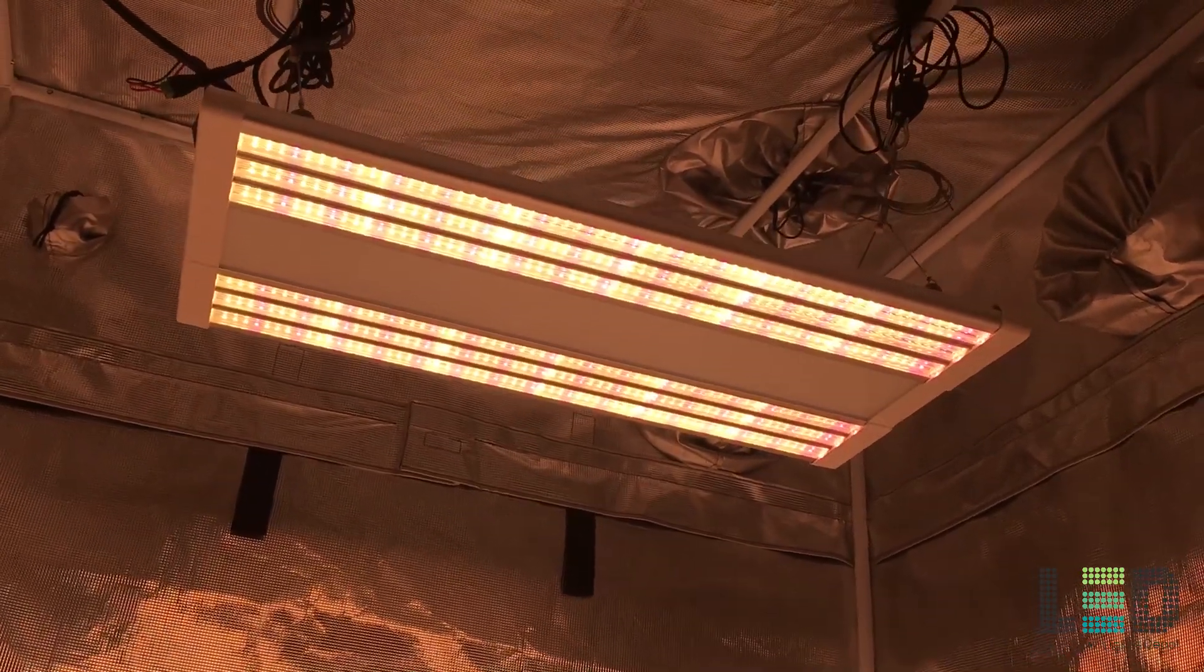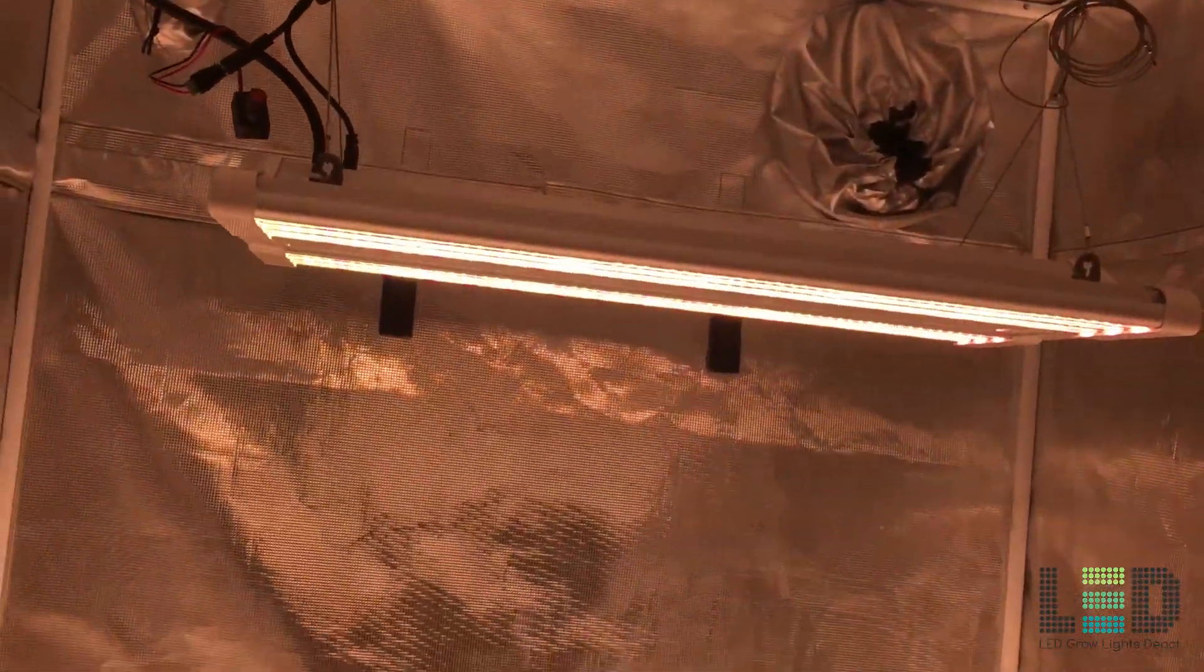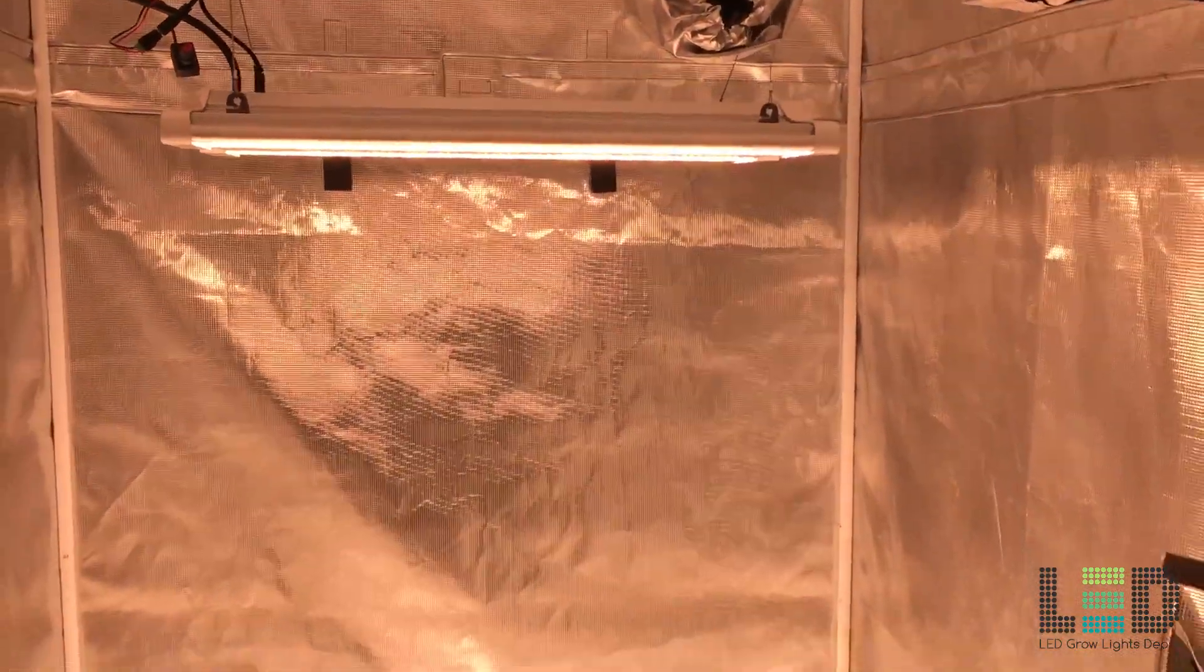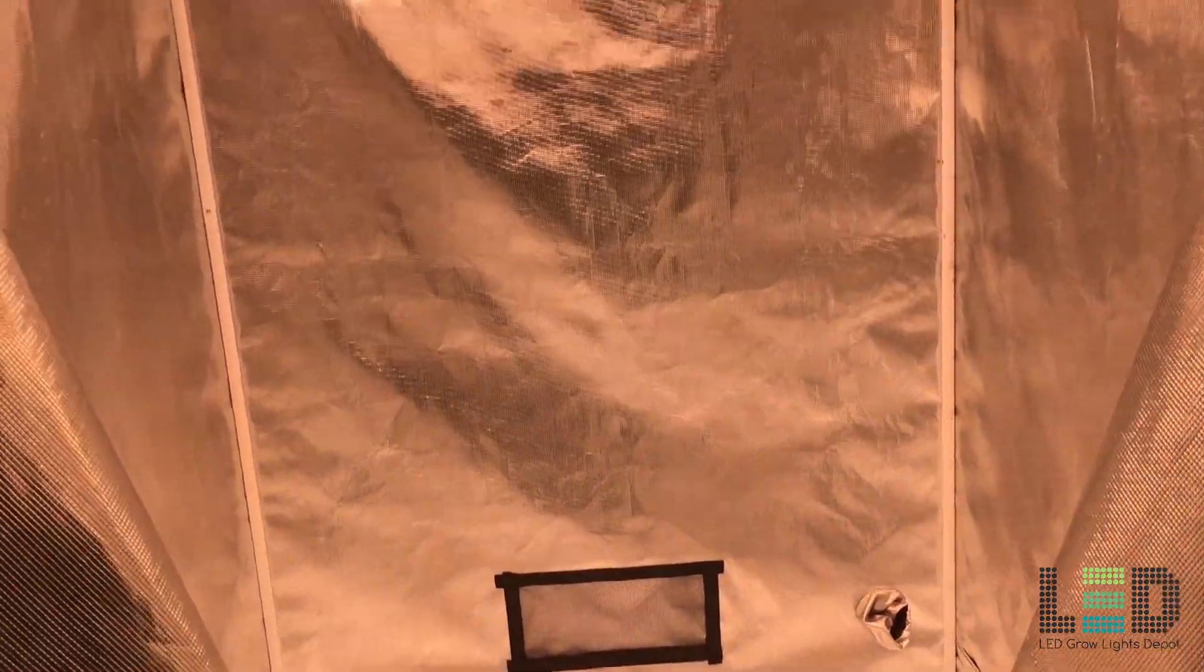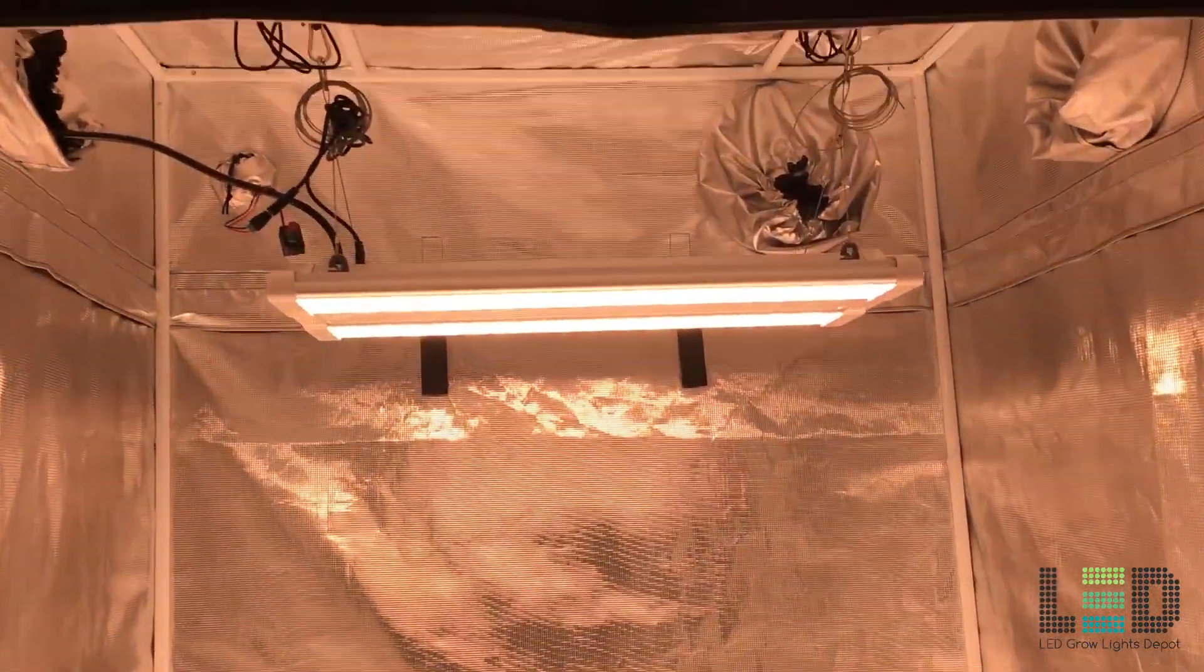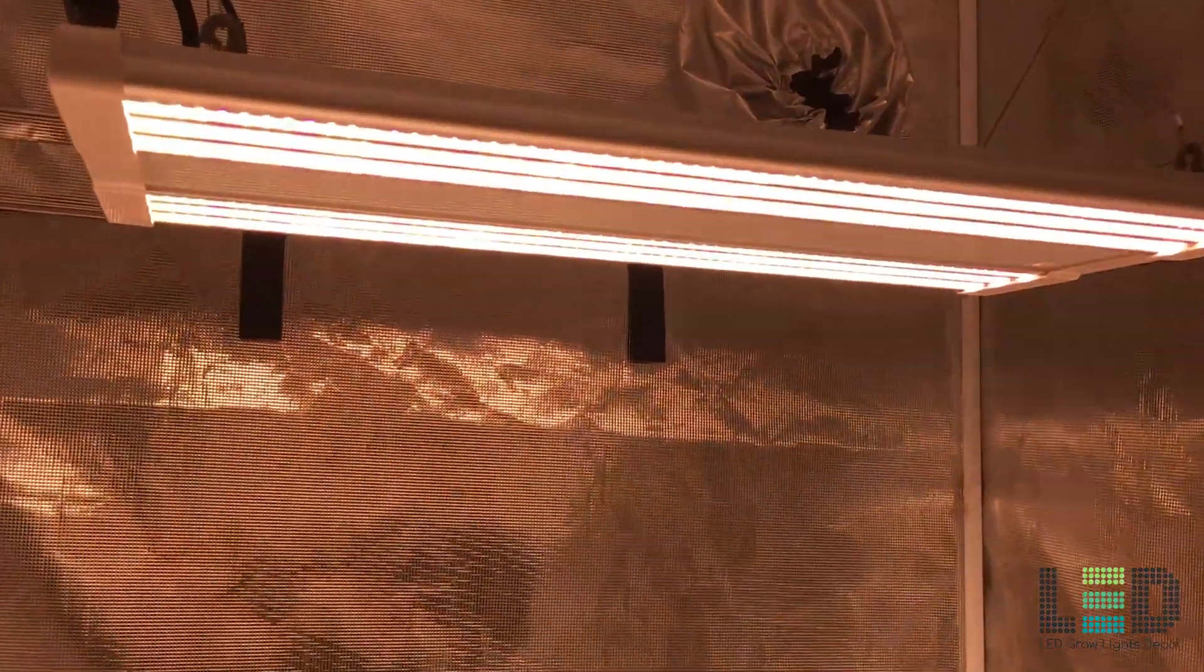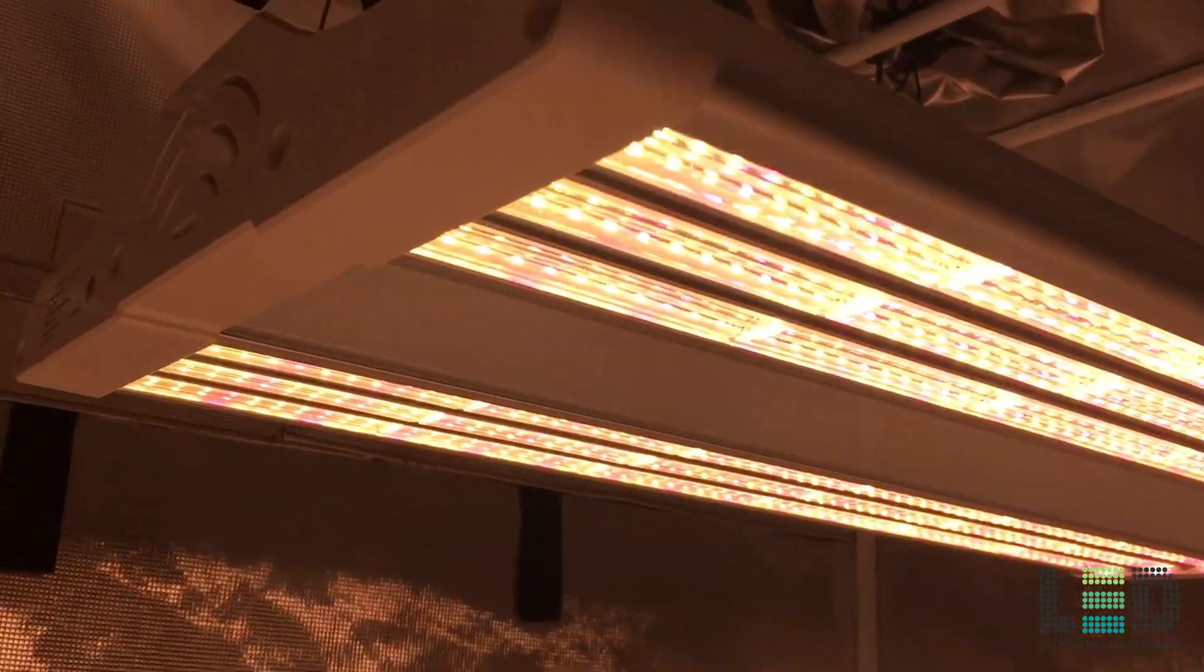A frosted glass panel runs down the entirety of the light and separates the two sets of LED strips. The dimmer allows you to adjust the intensity down from 100% to 10% and is quite handy when growing seedlings, clones, and during the vegetative phase when plants don't need as much light.